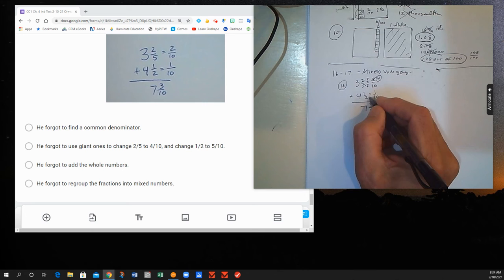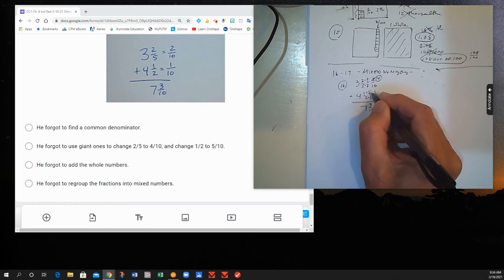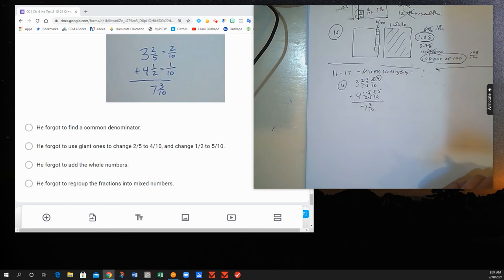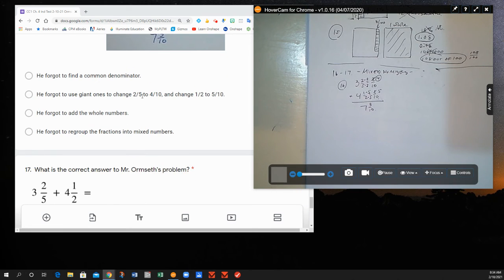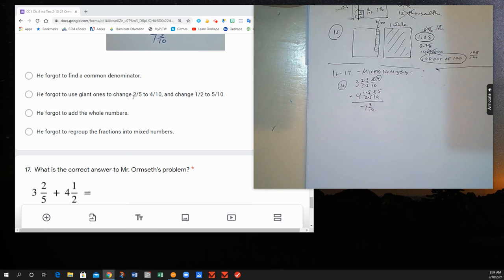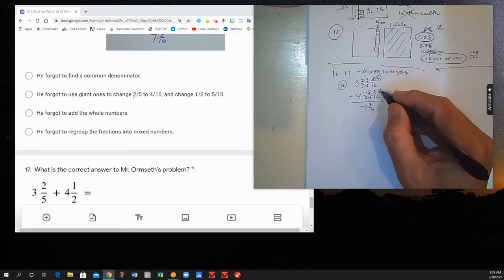And then down here, to make our 2 into 10, we're multiplying by 5. So we multiply the 1 times 5, and we get 5. So the issue here wasn't about the common denominators. It was forgetting to use giant ones to change the numerators and make the fractions equivalent.